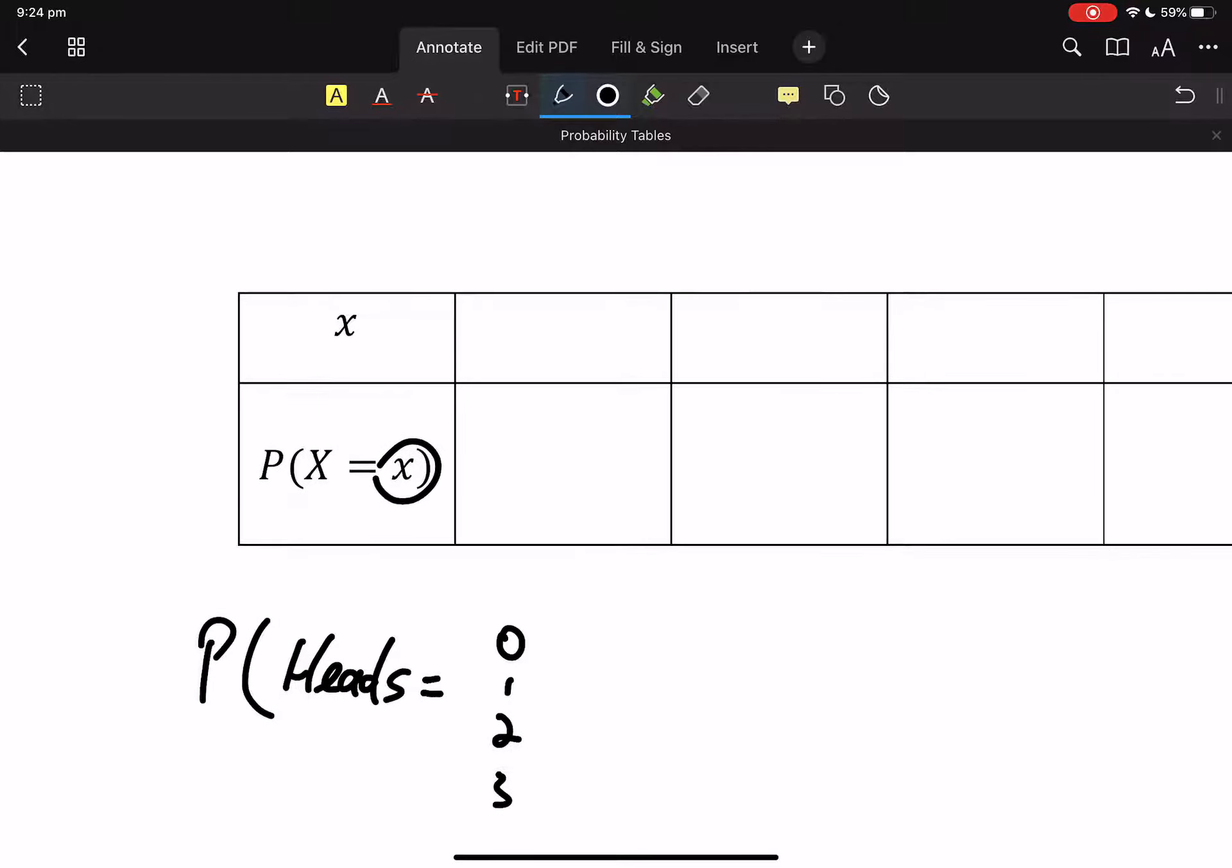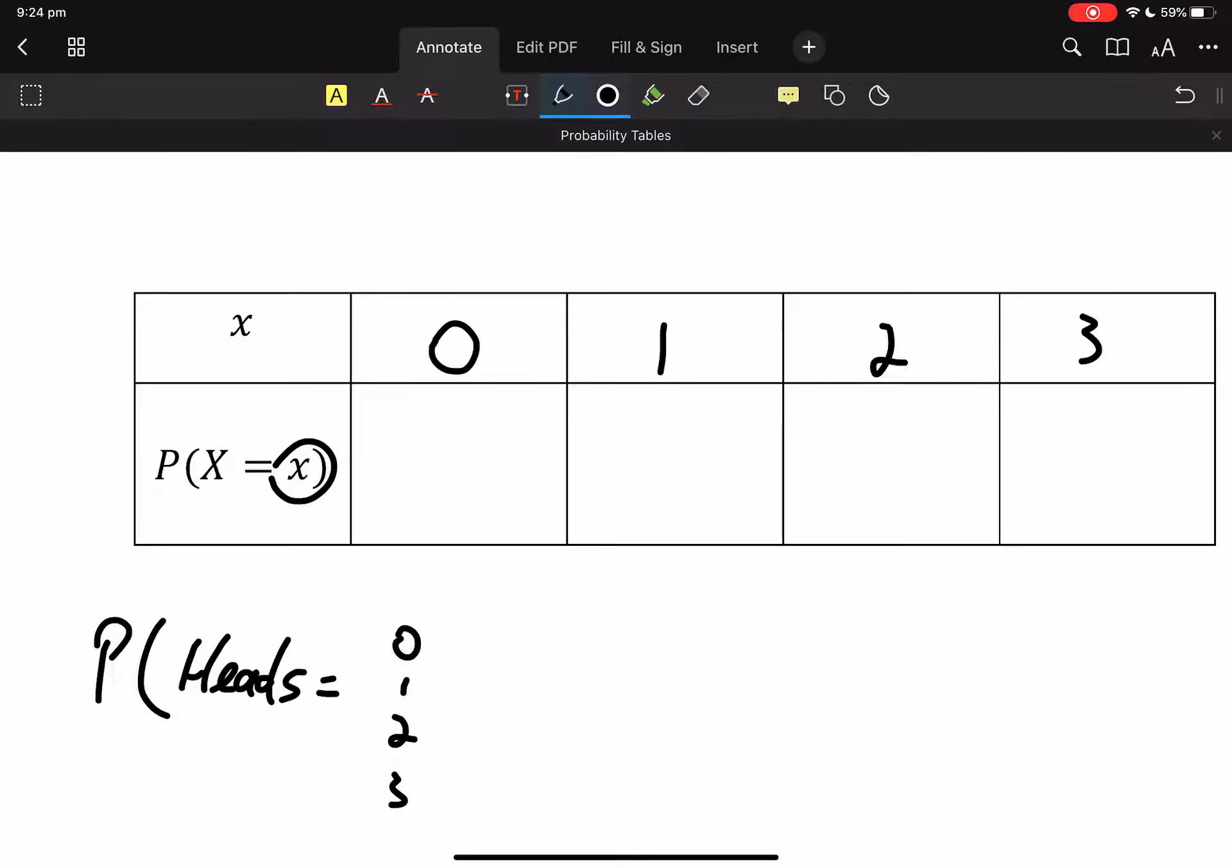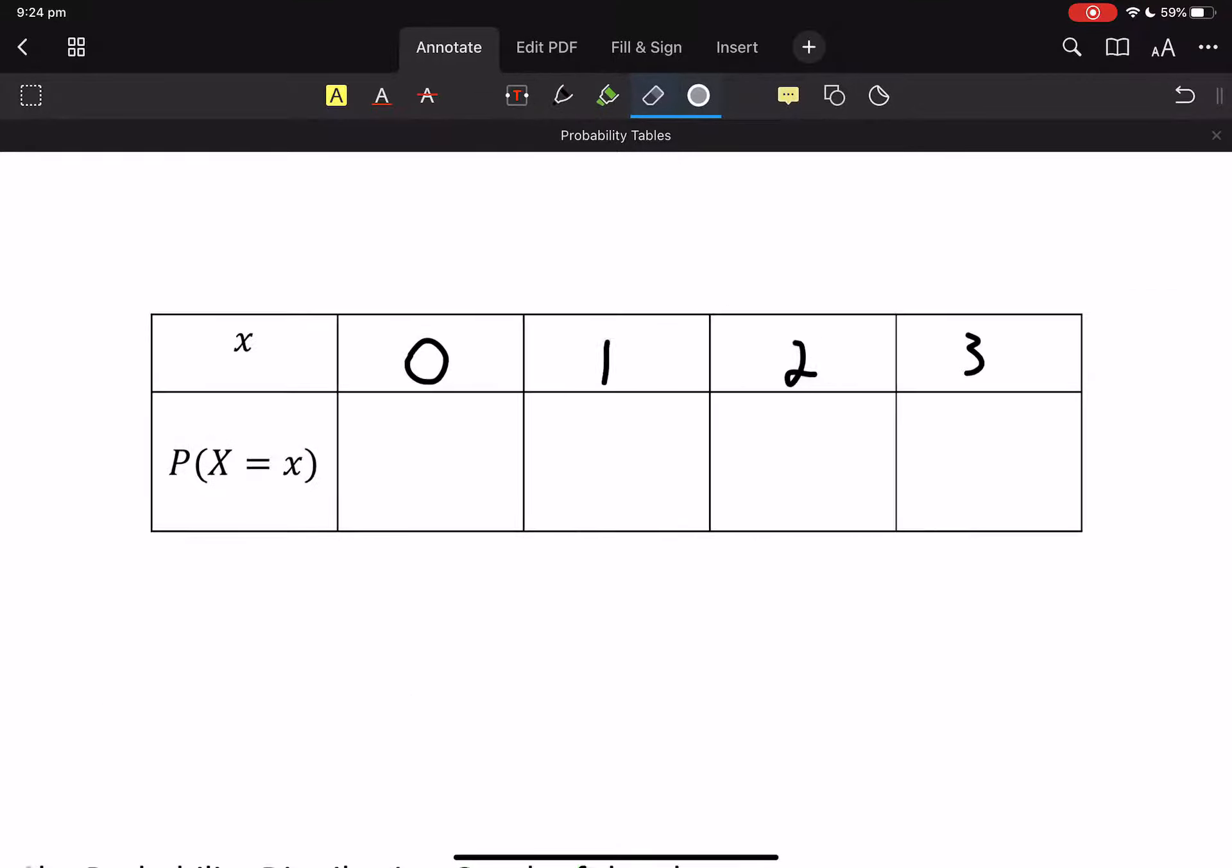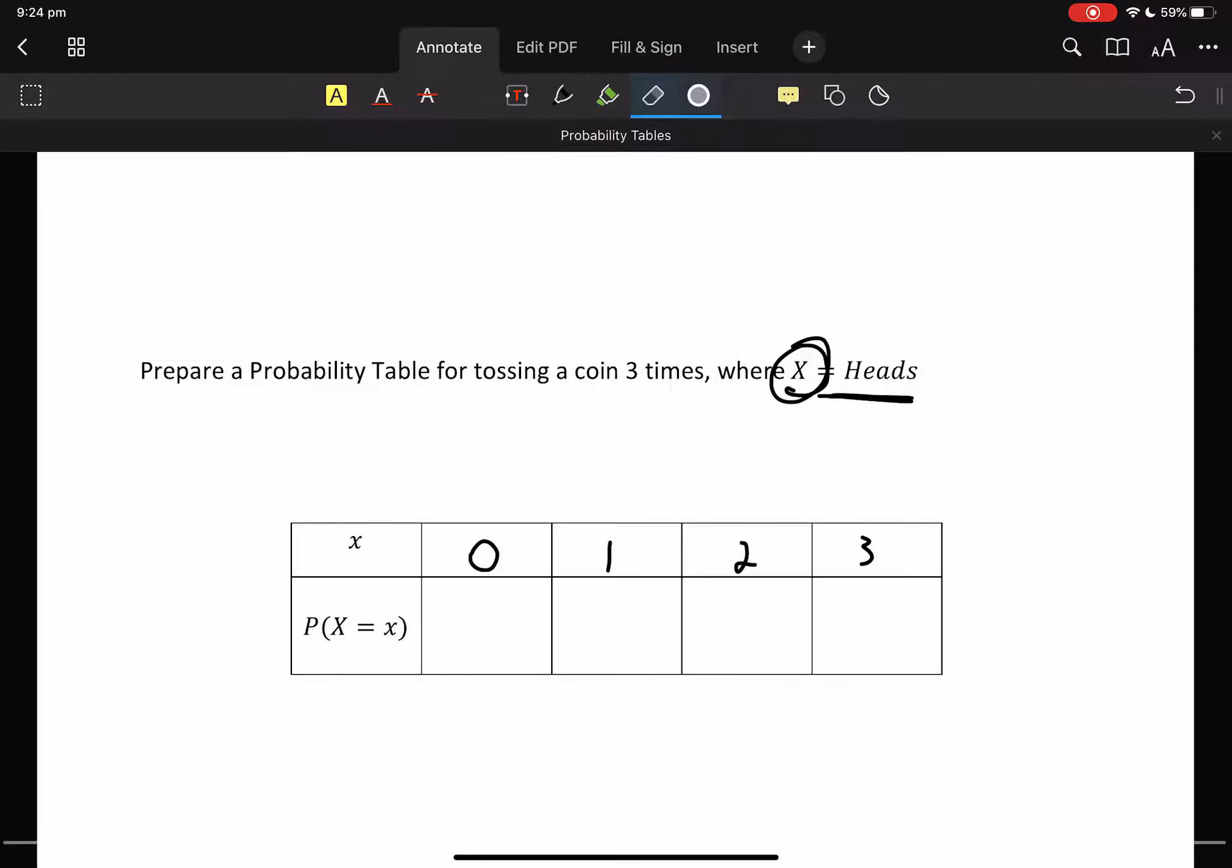So this little X could be zero heads, one heads, two heads or three heads is how we're trying to visualize this syntax and way of terminology and what we're looking at.